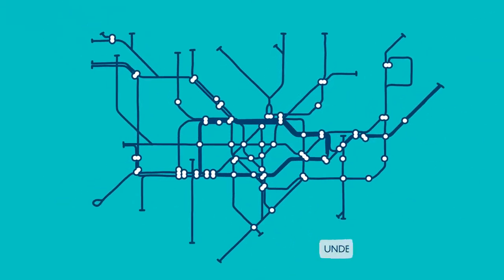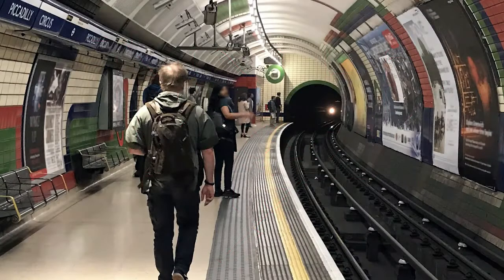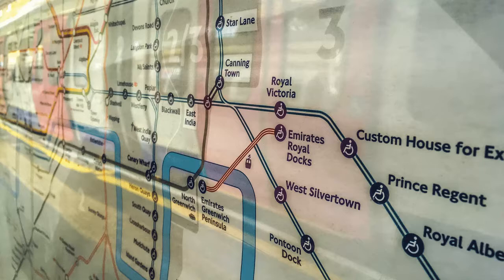Elimination has of course been applied throughout the London Underground, which would not exist without removing or eliminating the earth to build the functioning railway tunnels that transport passengers below the busy streets. London's Crossrail development is one of Europe's biggest construction projects, creating 42 kilometres of new tunnelling.